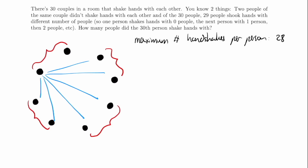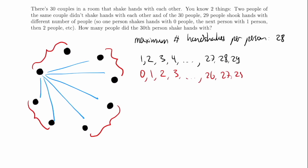So the maximum number of handshakes per person is 28. And since the 29 people shook hands with different numbers of people, if we enumerate all the people — one, two, three, four, all the way up to 27, 28, and 29 — the first one had to have shaken hands with zero people, the second with one, the third with two, all the way up to 26, 27, and 28.